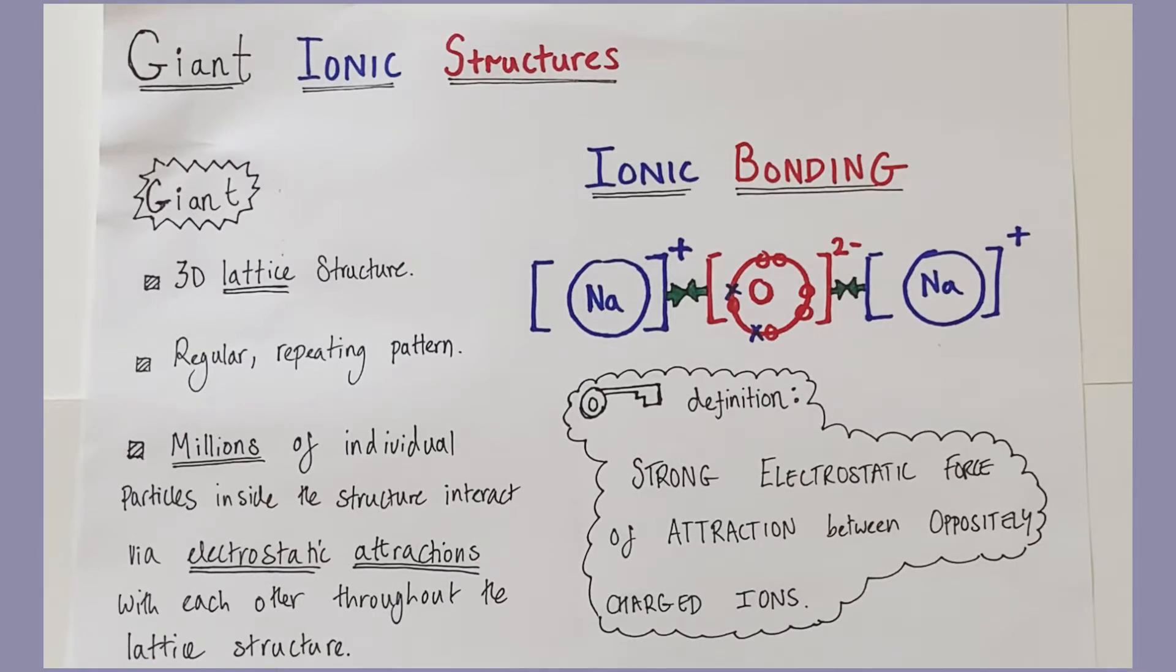The type of bond is dictated by what the particles involved are, and these electrostatic attractions will extend throughout the entire lattice structure, which often underpins the key properties of giant structures. In the case of giant ionic structures, we're talking about ionic bonding.